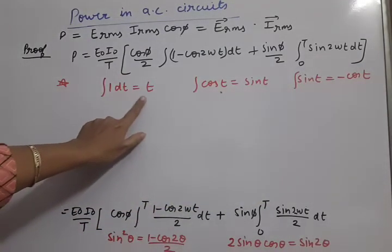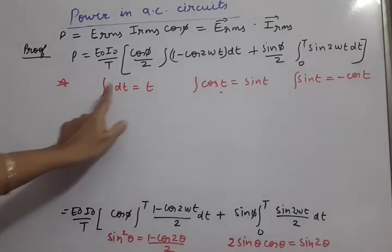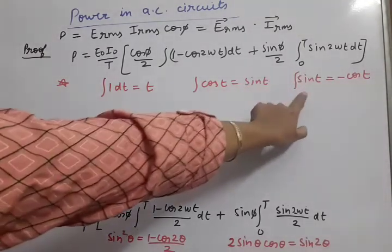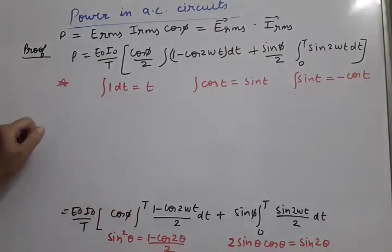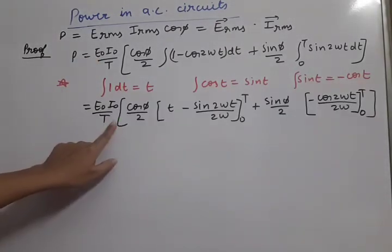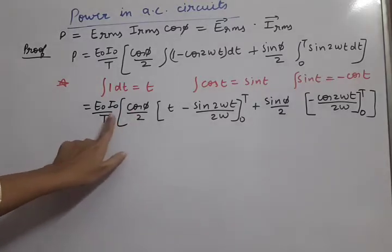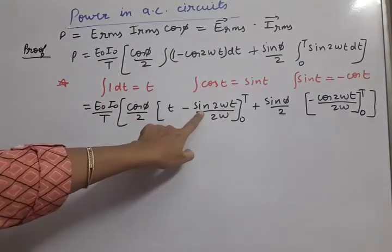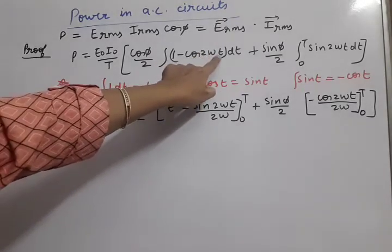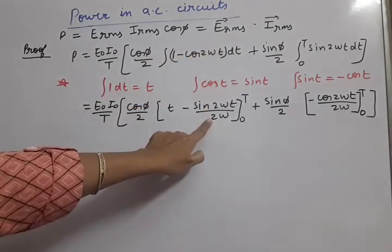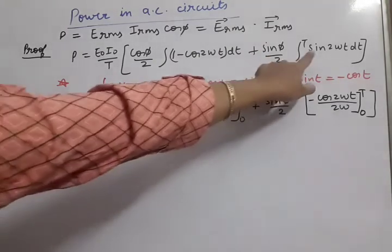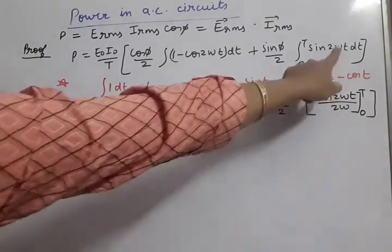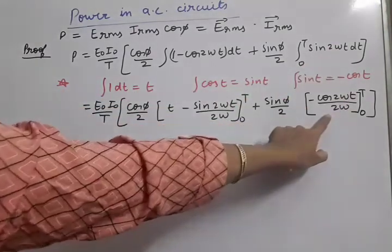We need these integration formulas: ∫1 dt = t, and the integration of cos gives sin, while the integration of sin gives −cos. Applying: cos φ/2 is out, integration of 1 is T, integration of cos(2ωt) gives sin(2ωt)/(2ω). For the sin φ/2 side, integration of sin(2ωt) gives −cos(2ωt)/(2ω). Limits are 0 to T, so we apply upper limit minus lower limit.